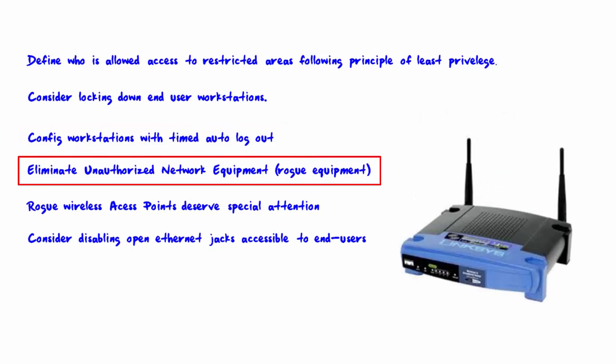Eliminate unauthorized network equipment — that is, rogue equipment. The most common type of unauthorized network equipment will be end users who install a device for convenience or fun, not realizing the security problems this can cause. They don't realize they could be creating a backdoor into the network. Make sure your AUP clearly addresses what is and is not allowed to be installed on the network, and ensure end users are educated about this. In my experience, more technically advanced users seem to pose a bigger problem.